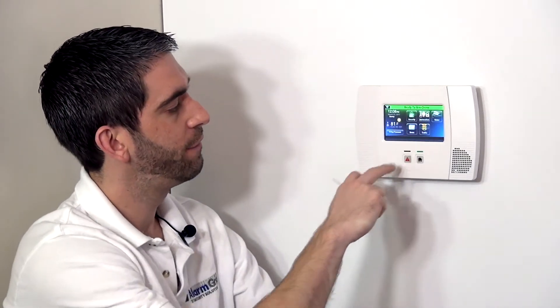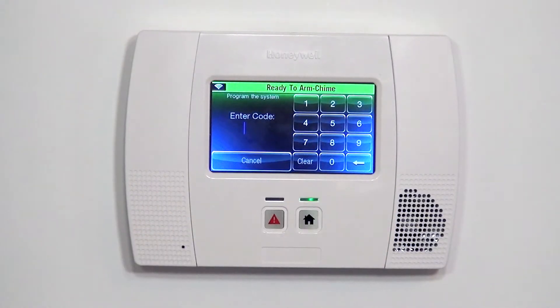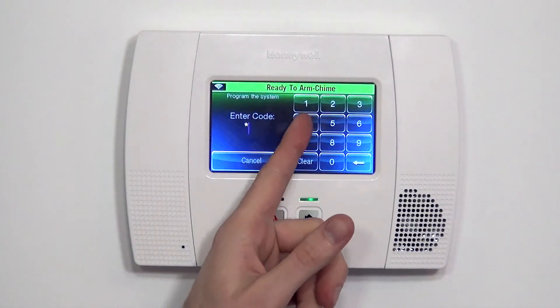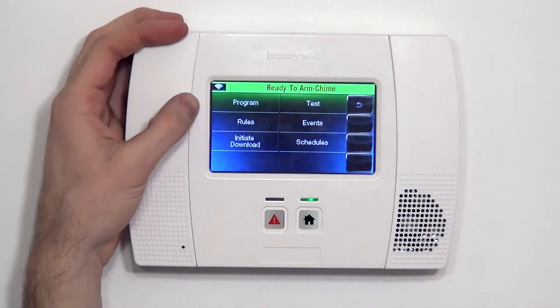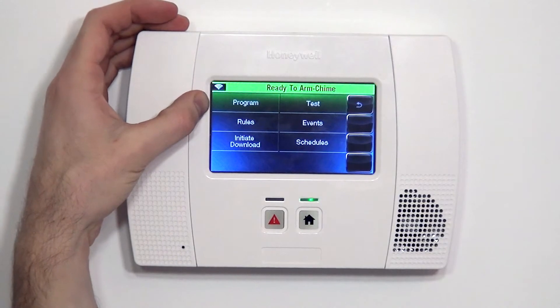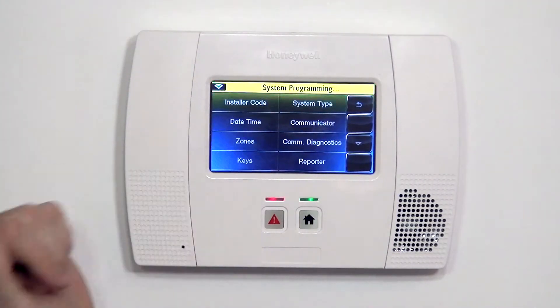The first thing we do from the home screen is hit Security, then More, and Tools. From Tools, we use 4112, which is the default installer code, and gets us to this screen where we can select Program to jump into System Programming. As soon as we hit Program, it says System Programming, letting us know we're now in Programming.